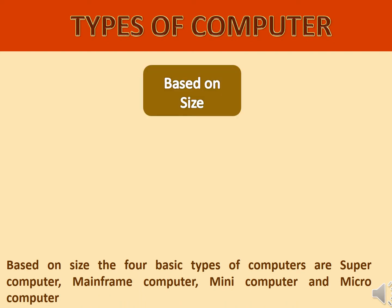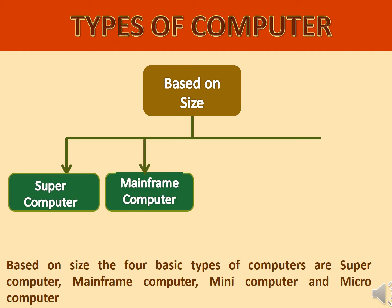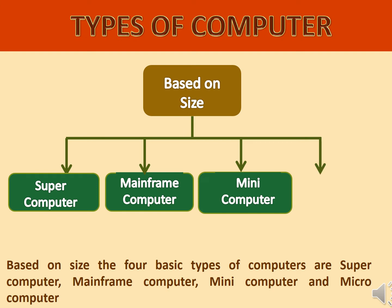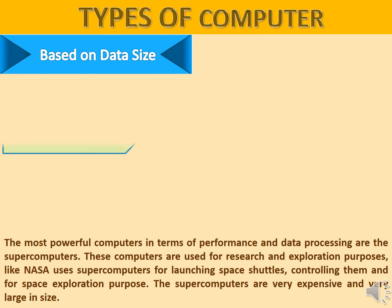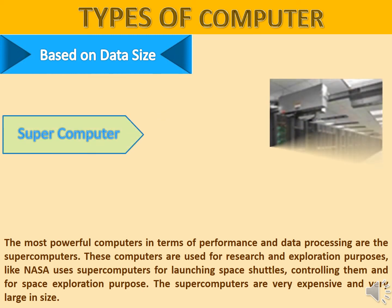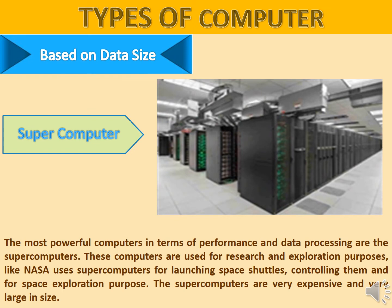Based on size, the 4 basic types of computers are Supercomputer, Mainframe Computer, Mini Computer, and Micro Computer. Supercomputers are the most powerful computers in terms of performance and data processing. They are used for research and exploration purposes — for example, NASA uses supercomputers for launching space shuttles, controlling them, and for space exploration. Supercomputers are very expensive and very large in size.